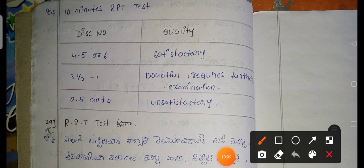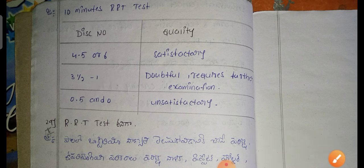Quality disc factor readings: disc number 4.5 to 6 is good quality; 3.5 to 4 is doubtful and requires further examination; 0.5 to 2 is unsatisfactory. Next, MBRT reading of 0 is unsatisfactory.